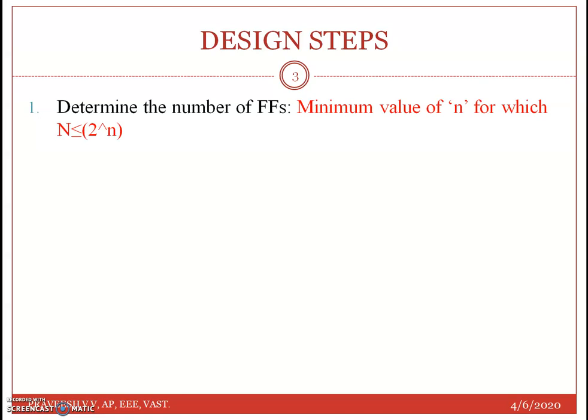We know the modulo value — that is the number of states — and we need to find N such that the modulo value M satisfies M less than or equal to 2 raised to N. For example, if the mode value is 5, then N equals 3 because 2 raised to 3 is 8, and 5 is less than 8. So we choose 3 flip-flops.